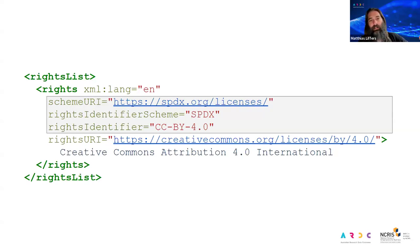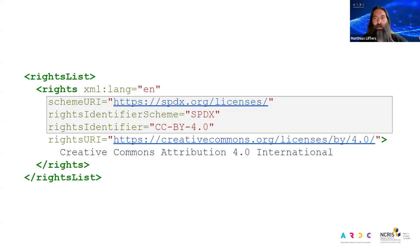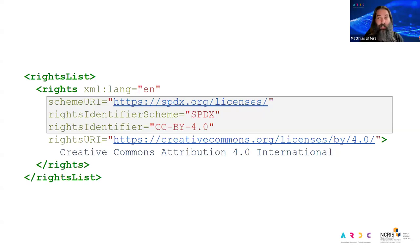If you're applying standard licenses to the objects you're minting DOIs for — and it's not necessarily just data, the license list also includes software licenses and licenses for other kinds of intellectual property — I heartily recommend that you include this machine-readable metadata, so that when somebody wants to search for datasets available under open licenses, it's easier for a discovery portal or system to pull those results.